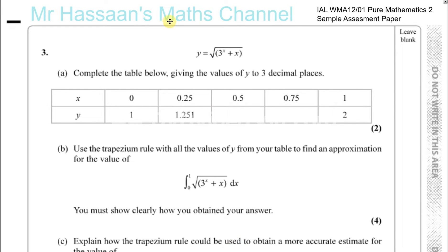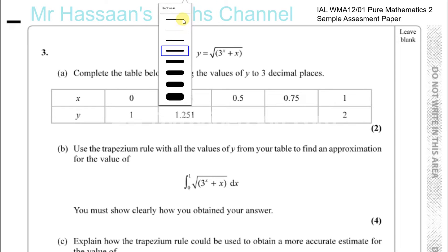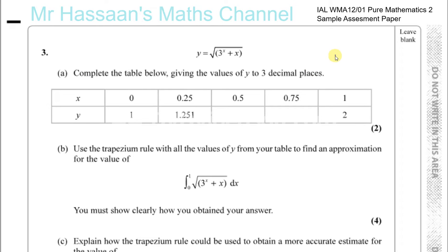Question number 3 from the Pure Mathematics 2 International A-Level Sample Assessment Paper. The question is about the Trapezium Rule. Y equals the square root of 3 to the power of X plus X. Complete the table below, giving the values of Y to 3 decimal places.